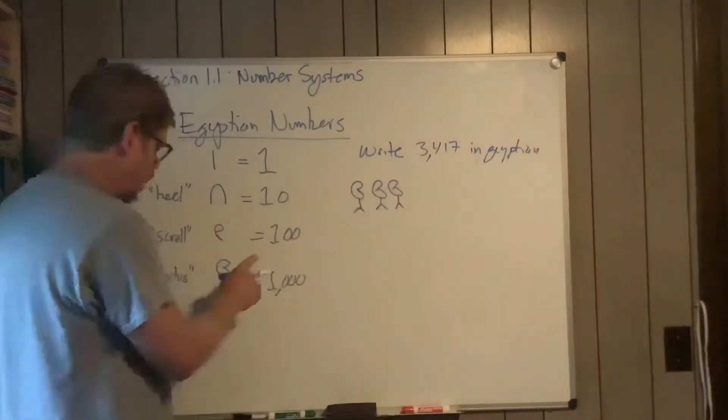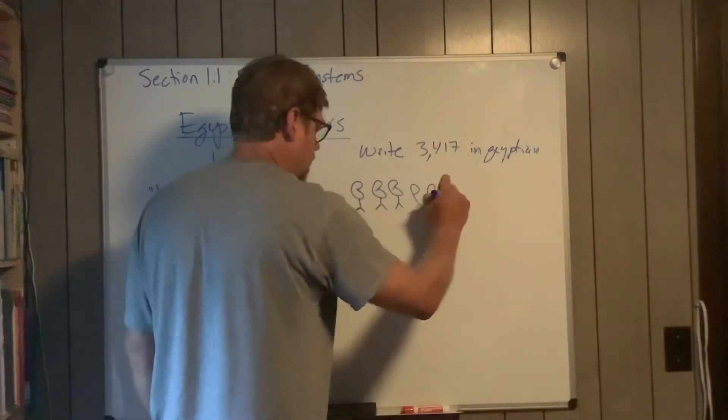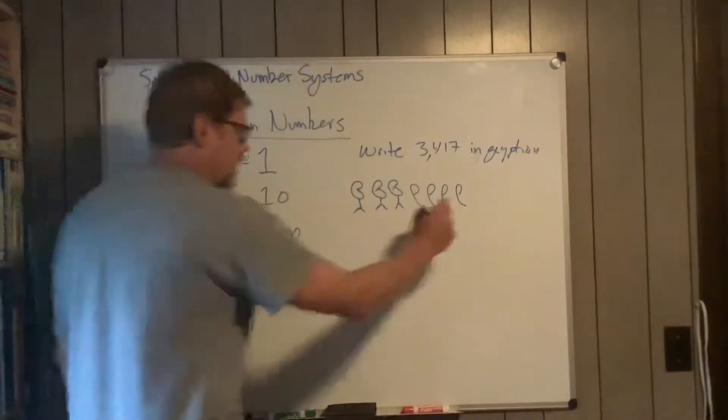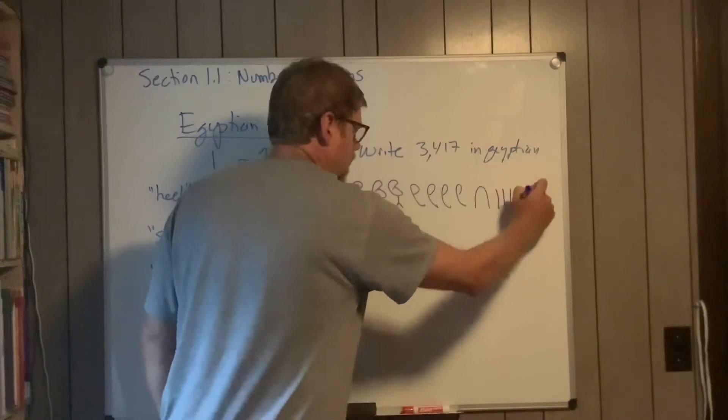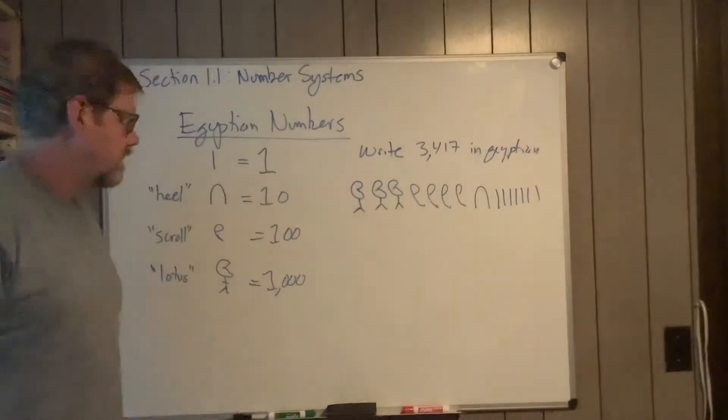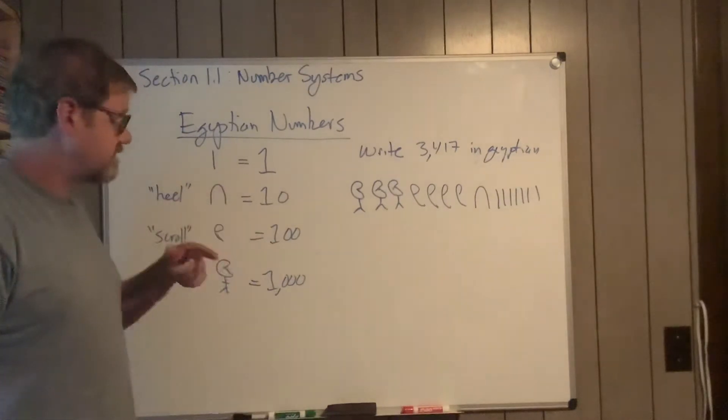And then four of the little scroll guys, one heel, and then seven ones: one, two, three, four, five, six, seven. So it's a base-10 system.